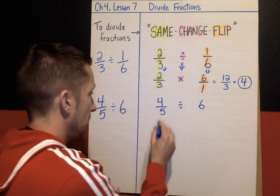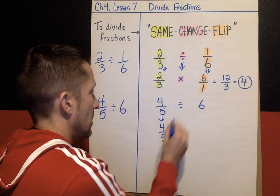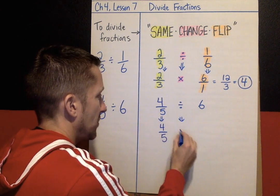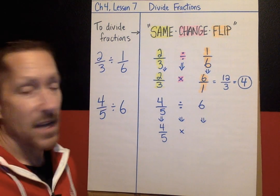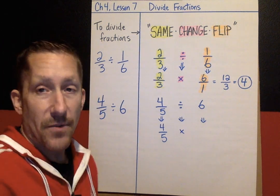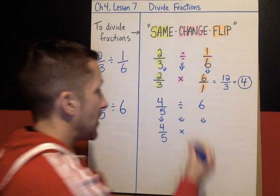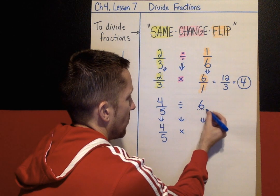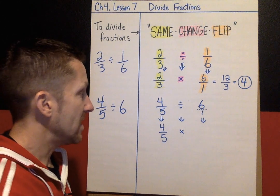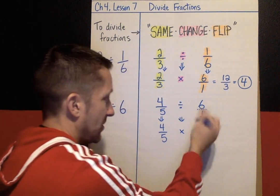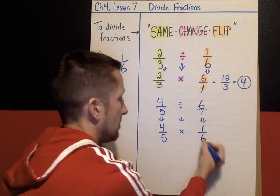So 4/5 is going to stay the same. Divide is going to change to multiply. And I want the reciprocal of 6. Remember from a couple of lessons ago, any time you have a whole number, you can make it a fraction by putting that number over 1 — so 6 is the same as 6 over 1. Now my reciprocal is flipping numerator and denominator, so the reciprocal of 6 would be 1/6.